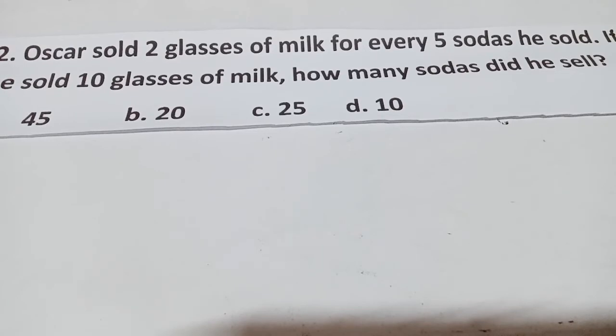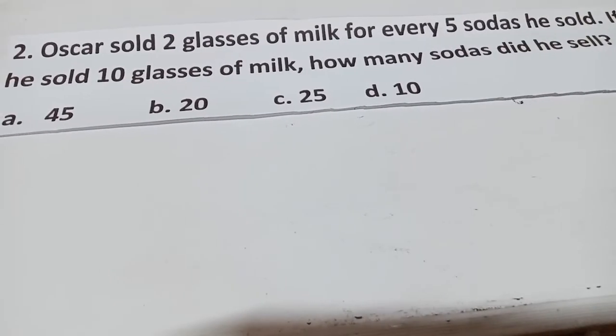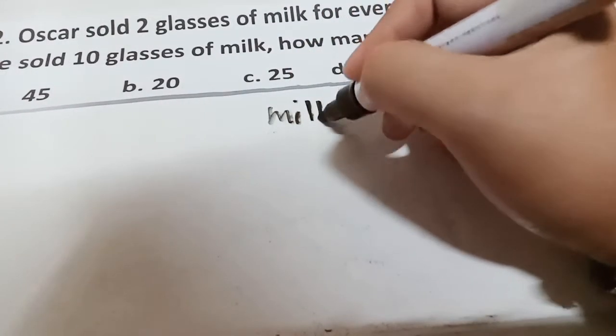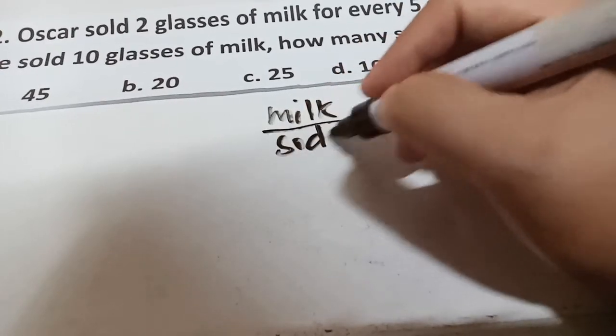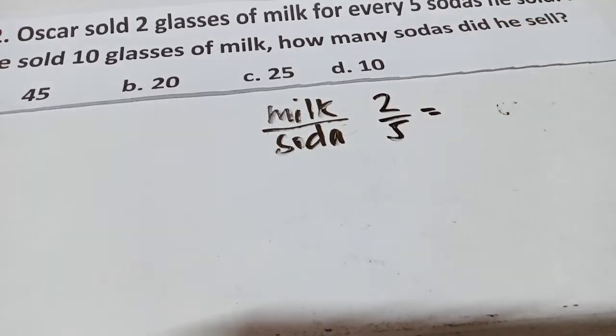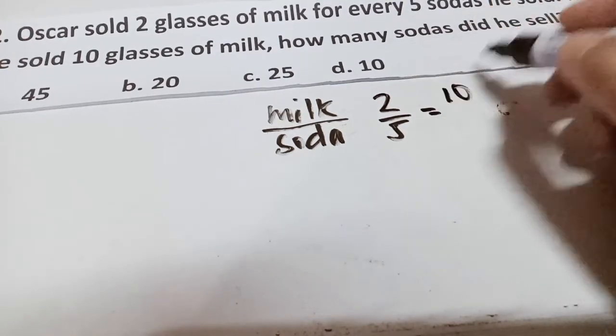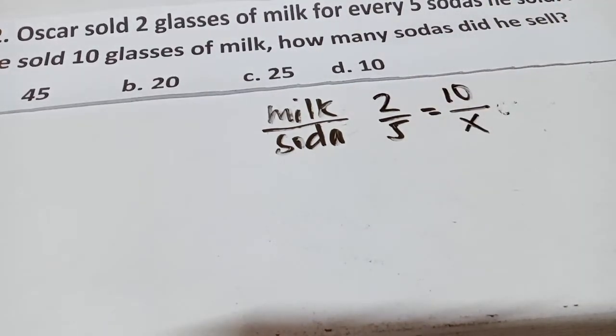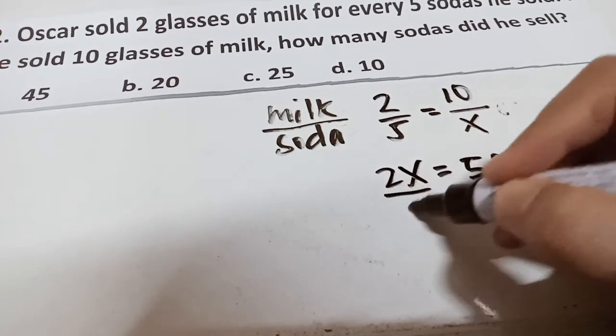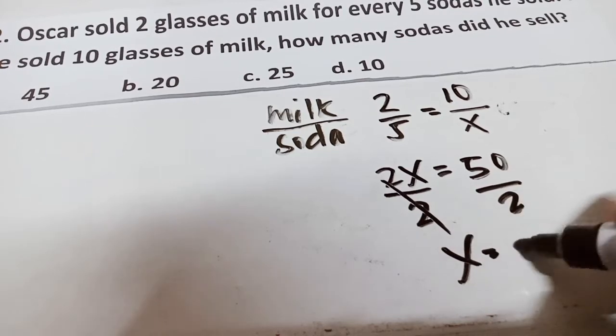Oscar sold 2 glasses of milk for every 5 sodas he sold. If he sold 10 glasses of milk, how many sodas did he sell? What you will do is to have a ratio and proportion. Milk and soda. Take note guys, we have 2 over 5 equals 10. How many sodas? Let's put an x here. We need to have a cross multiply: 2x equals 50. Divide it by 2. x will be 25.